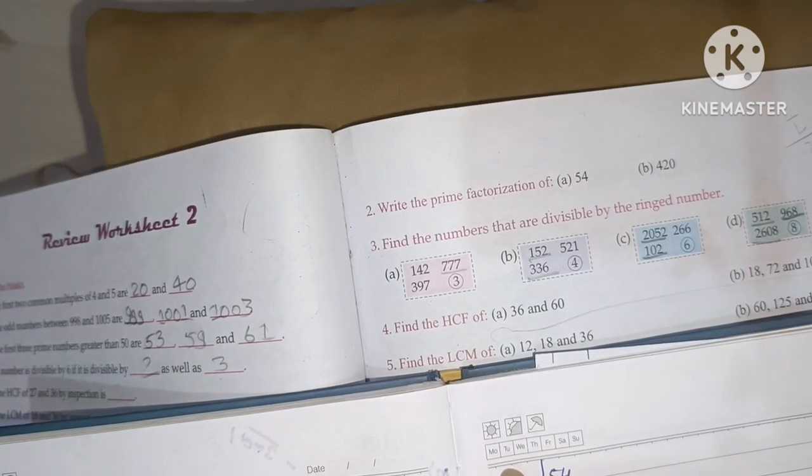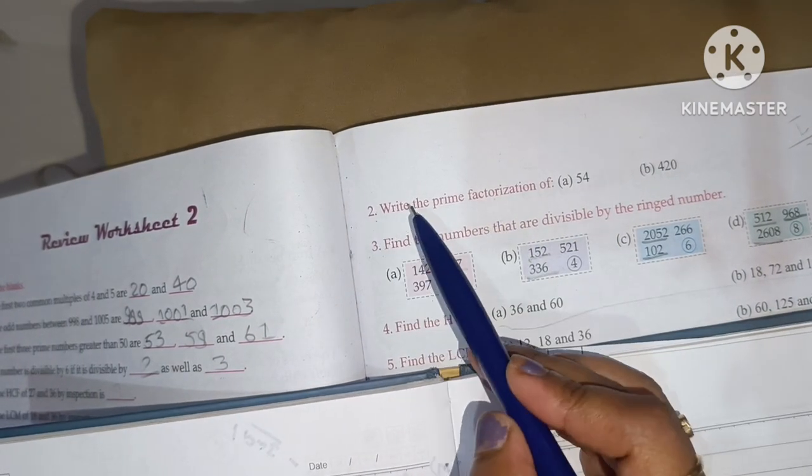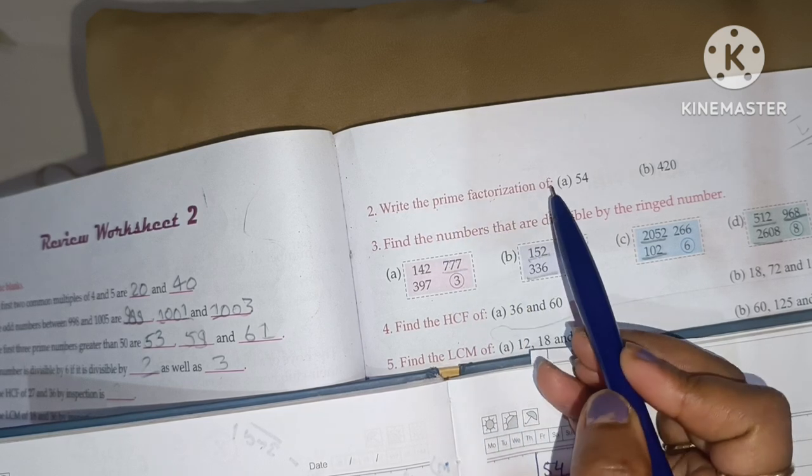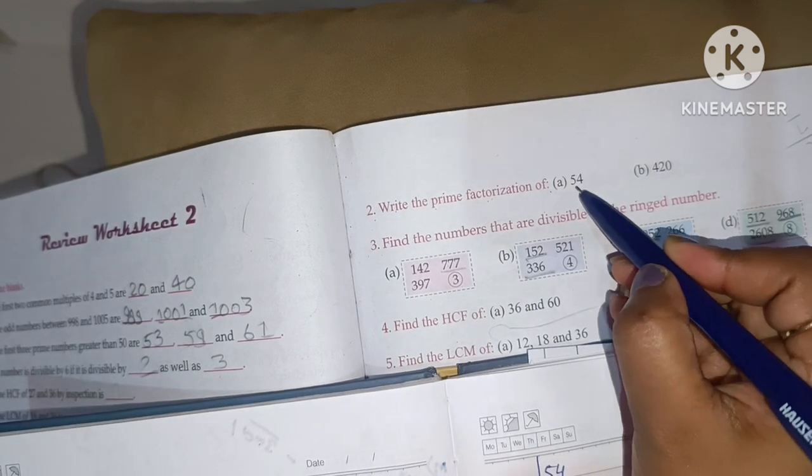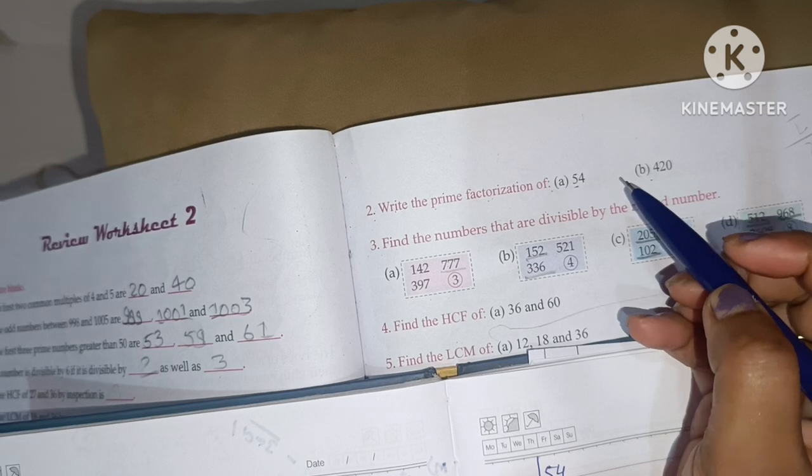And now today we are going to solve question number 2. Write the prime factorization of A number 54 and B is 420.